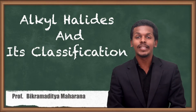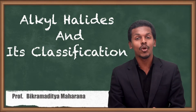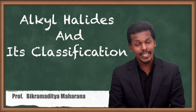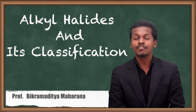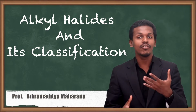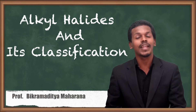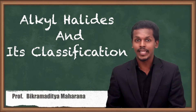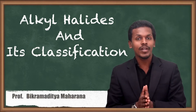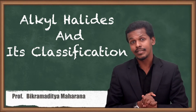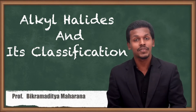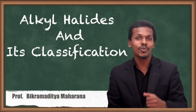In the previous lecture we got to know about the classification of the halogen derivatives of alkane, where we classified them into mono, di, tetra halogen derivatives of alkane. Now we are going to specifically talk about alkyl halide — what is alkyl halide and what is its classification.